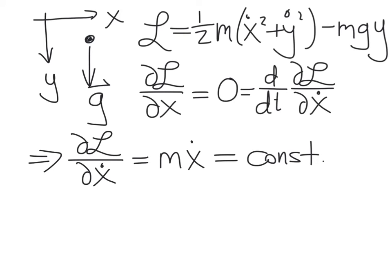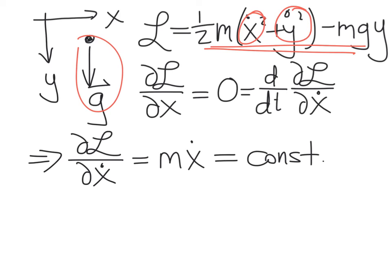Another good example: imagine a particle in freefall under a gravitational acceleration g. The Lagrangian for that system includes the kinetic energy due to x-coordinate motion, the kinetic energy due to y-coordinate motion, and the gravitational potential energy, which only depends upon y. Therefore, the partial derivative of the Lagrangian with respect to x is zero. And according to the Euler-Lagrange relationship, this equals the time derivative of the x-partial derivative of the Lagrangian.